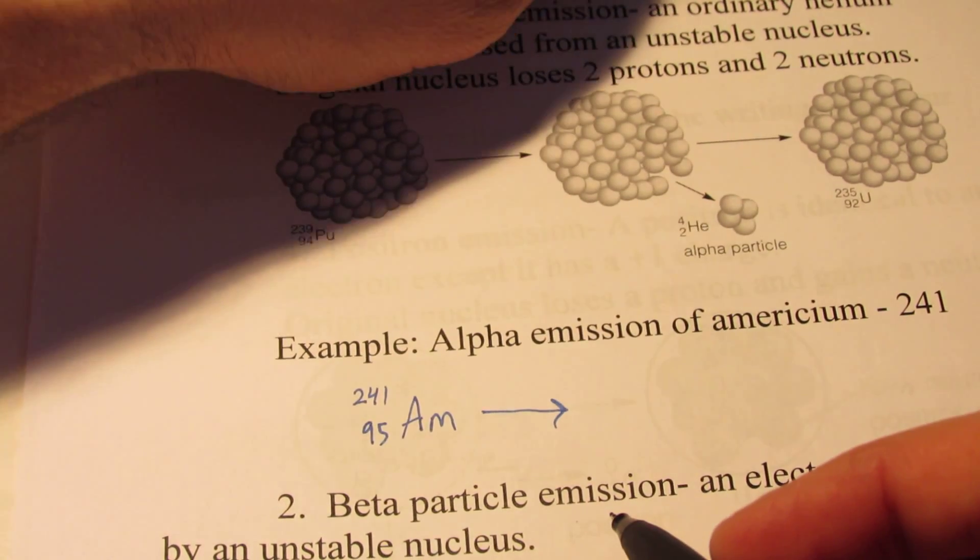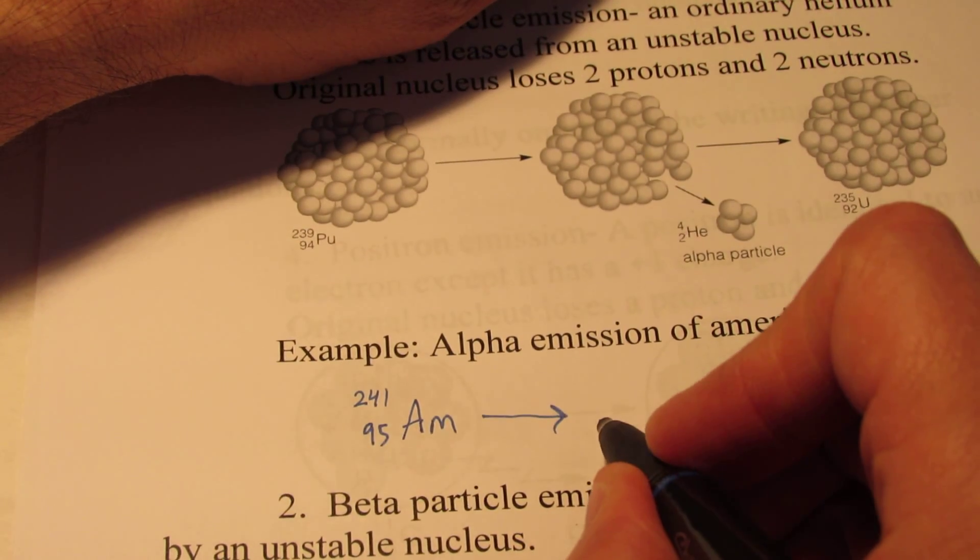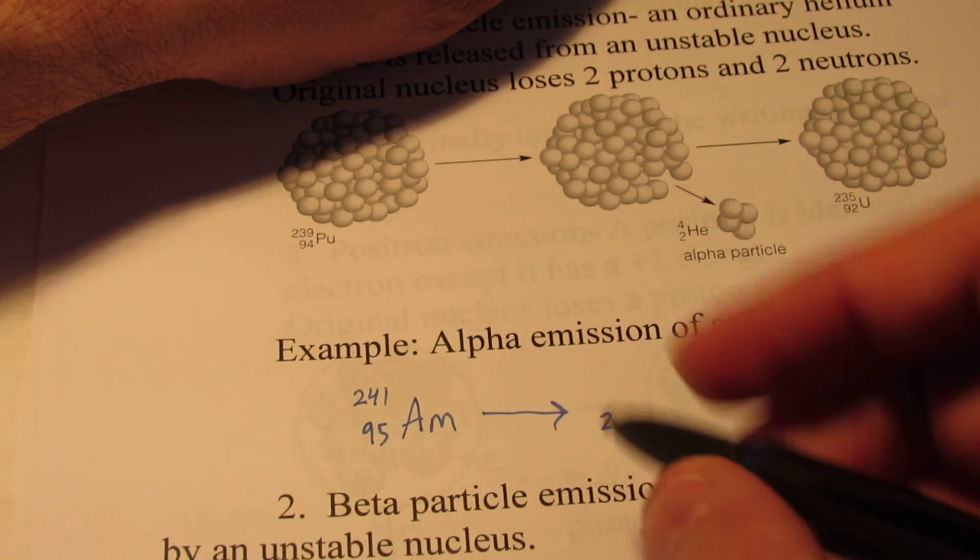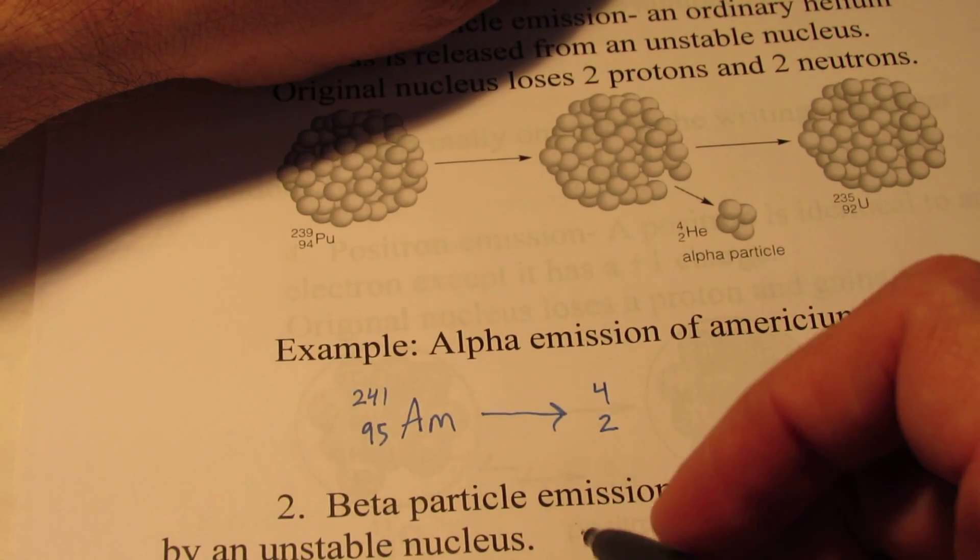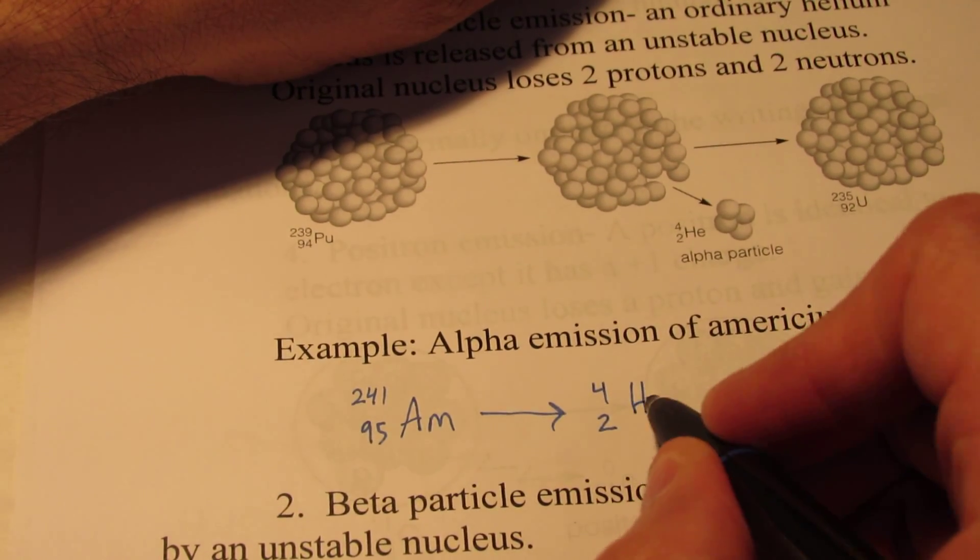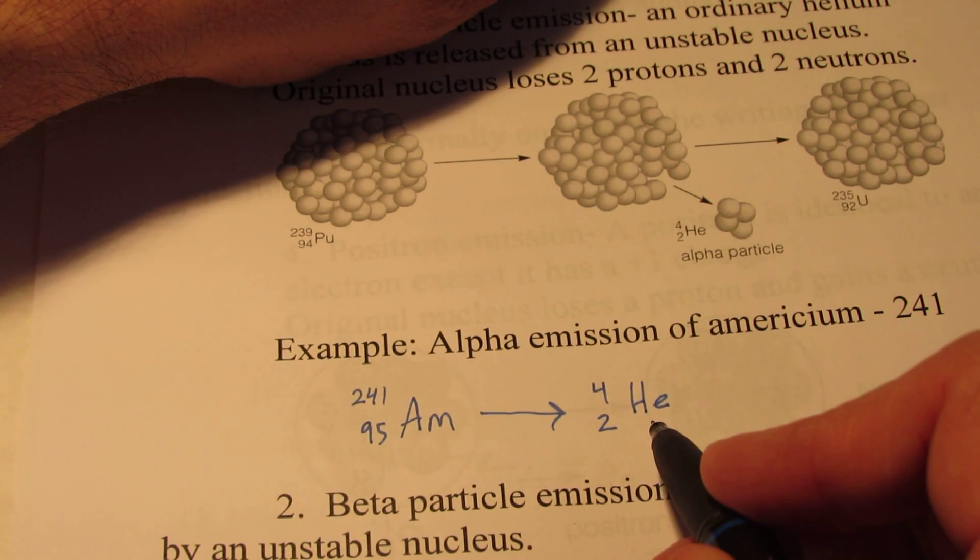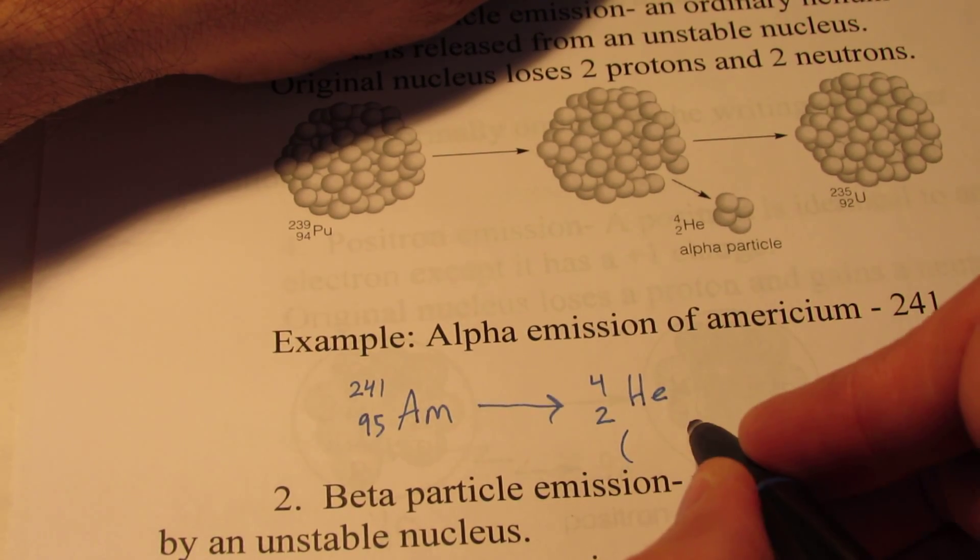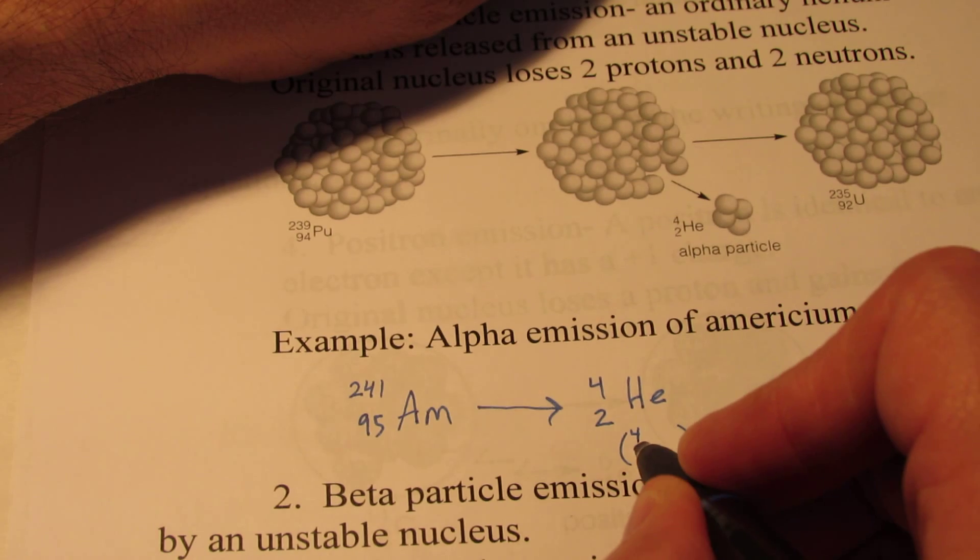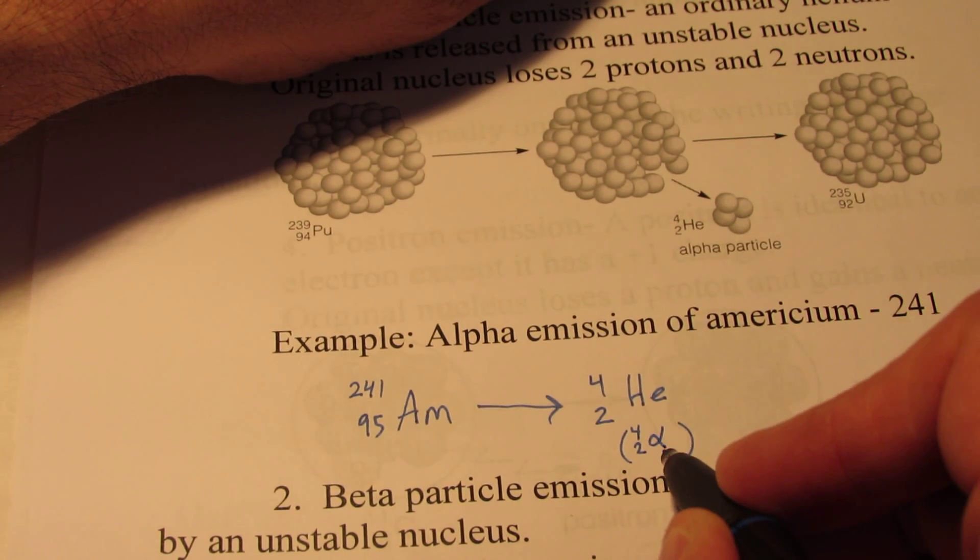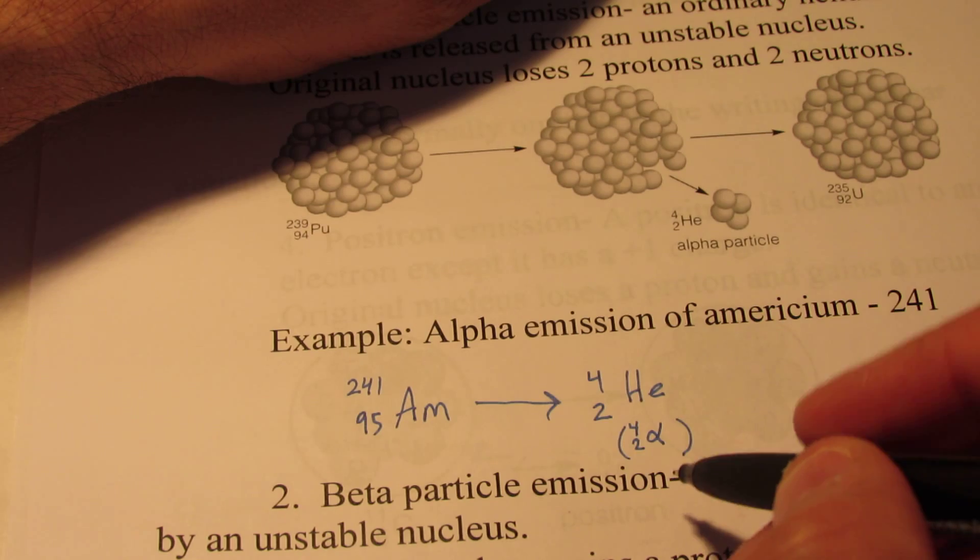Now, it emits an alpha particle. So it's going to lose two protons and two neutrons, so a mass of 4. And we will symbolize that with the element symbol for helium. By the way, sometimes that is symbolized with 4 over 2 and the Greek letter alpha. Either way is fine with me.